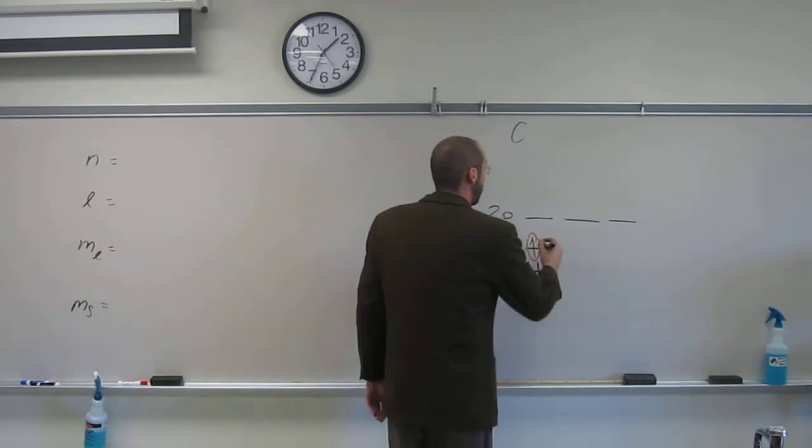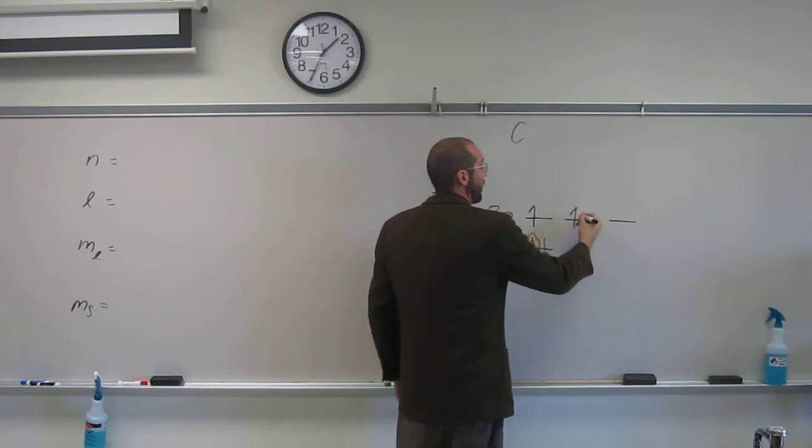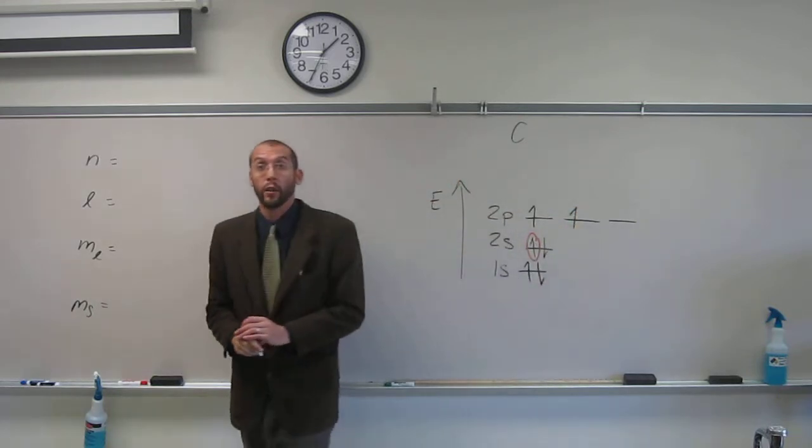And then carbon has six electrons, so fourth, fifth, sixth. So that'll be the other electron that we described.